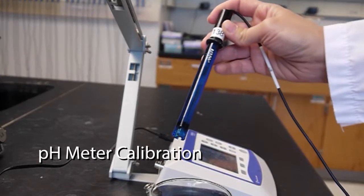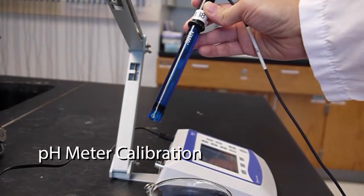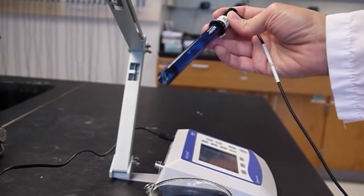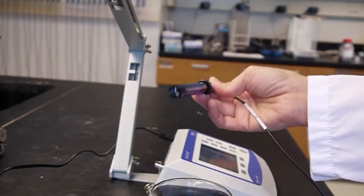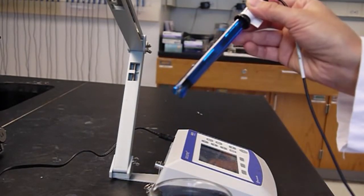A pH meter is going to use a pH electrode. The pH electrode has a glass bulb at the bottom. Be very careful with the pH electrode because this glass bulb at the bottom is very fragile.